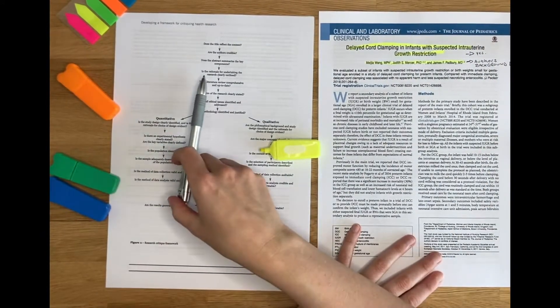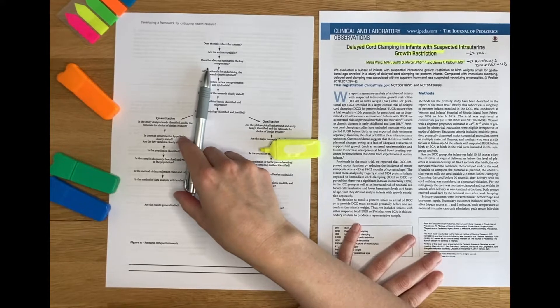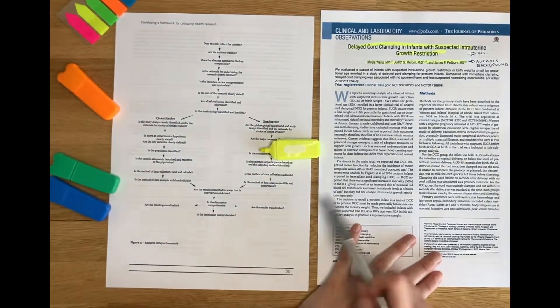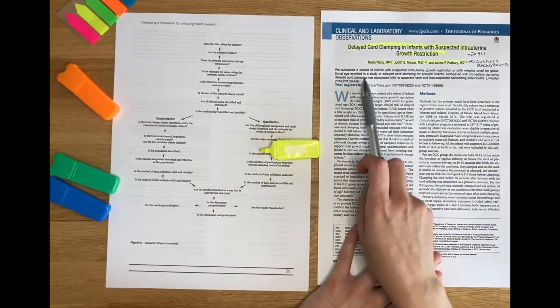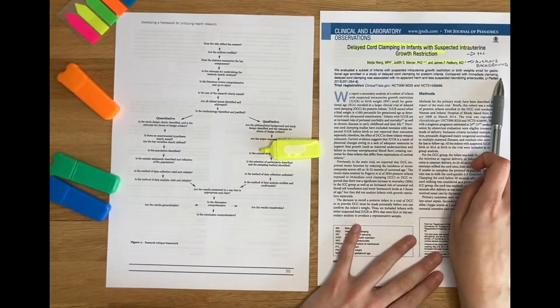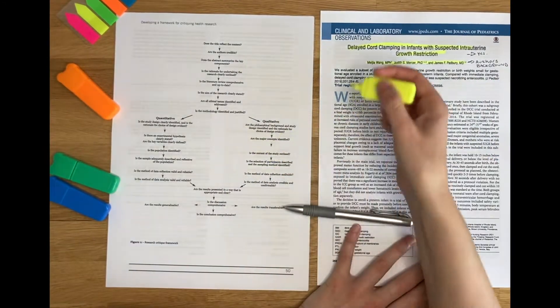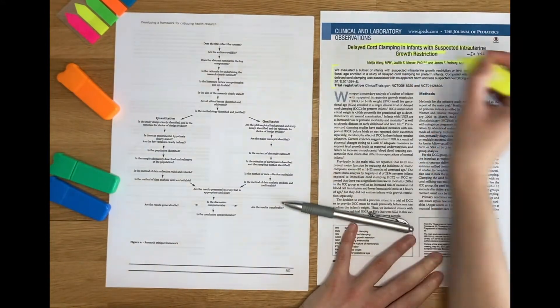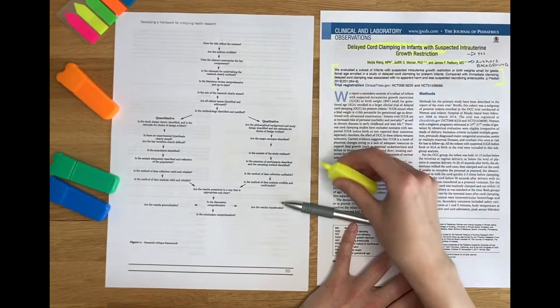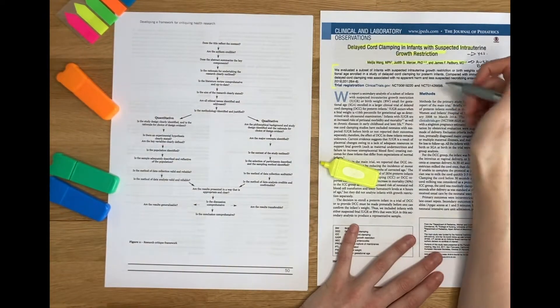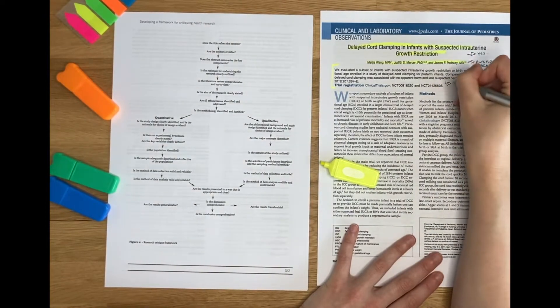So I can keep going down the framework. The next question is, does the abstract summarize the key components? Now, I'm going to presume this is the abstract. They haven't perhaps given us a detailed abstract. Again, I'm going to highlight this and make some comments on it. For example, say that it's short.